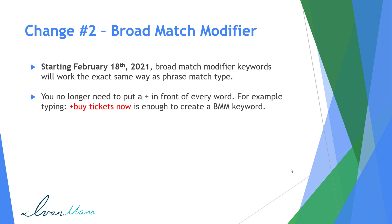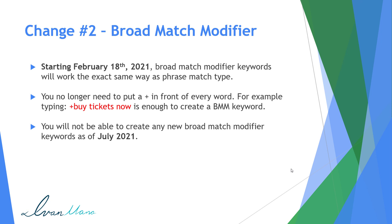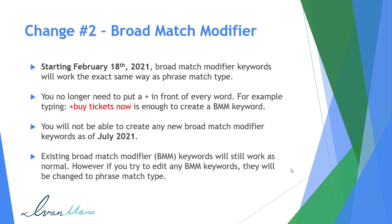Now you no longer have to do that. Starting February 18th, you just have to put one plus sign and that's going to trigger the broad match modifier match type for this entire keyword. Now here's where the important bit comes in: starting July 2021, you will not be able to create any new broad match modifier keywords. Any existing broad match modifier keywords will still work as intended, but if you do try to edit any specific keywords, they will be converted to phrase match type. The main takeaway is that broad match modifier match types really are going away and becoming obsolete. Any existing data you have for broad match modifier keywords will be kept — it will just be converted into a new phrase match type keyword which will gather new data.